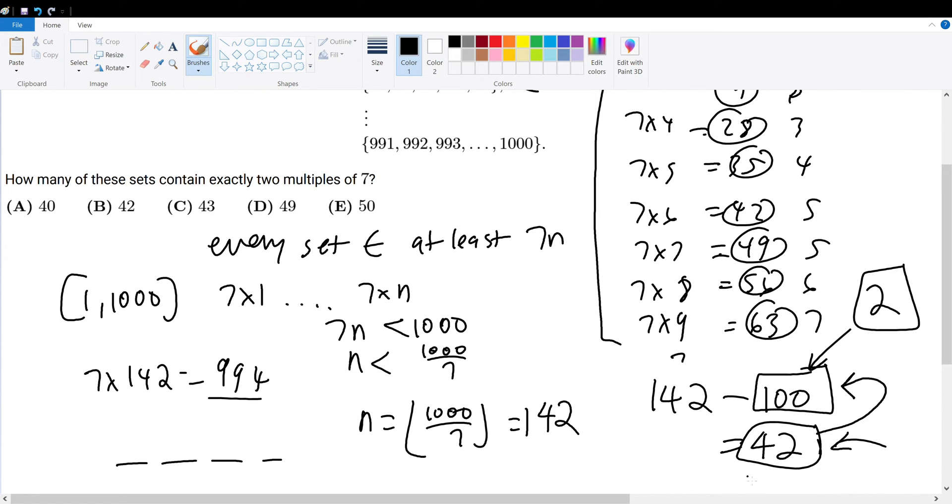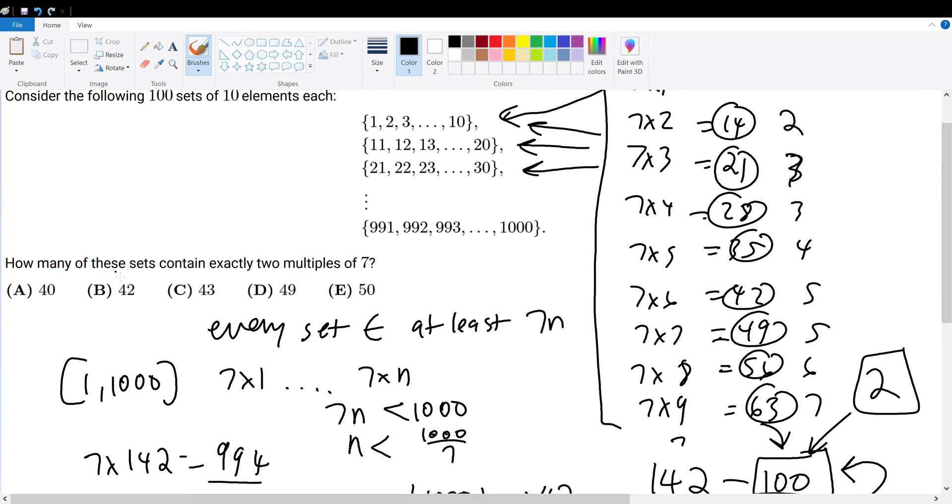And since each of the 42 can be distributed to each of the 100 series that already have one multiple of 7, that must mean 42 is your answer. Because 42 is the amount of multiple of 7s left over, and therefore the amount that's given to the 100 sets that still need them. Therefore, your answer would be answer choice B.